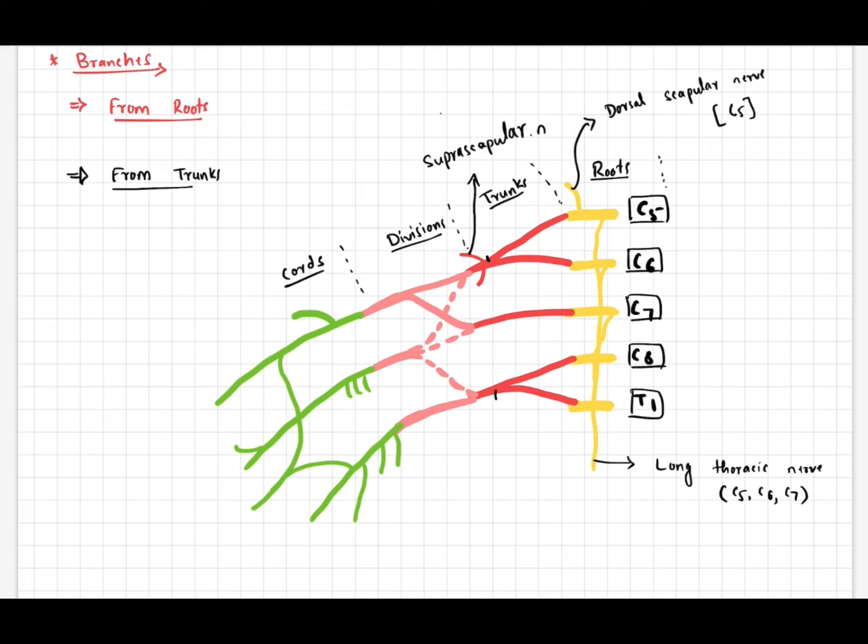From trunks, from upper trunk: suprascapular nerve C5 and C6, and nerve to subclavius C5 and C6.